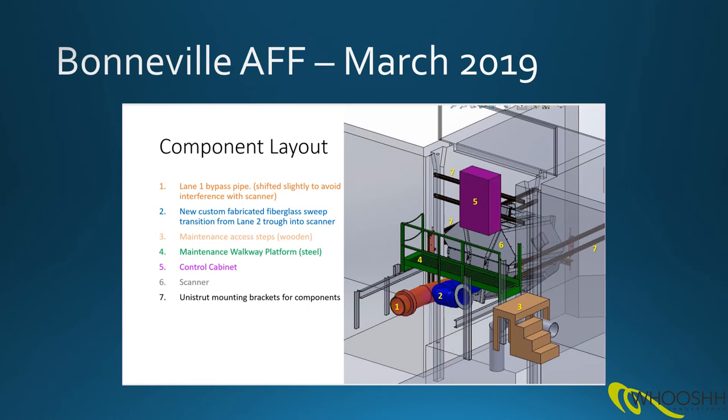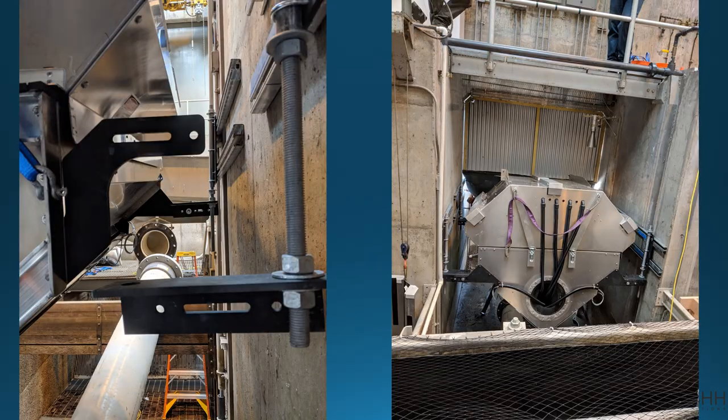A similar installation in 2019 was at the Bonneville Adult Fish Facility. The scanner was placed in the fish bypass. This means that all the fish not selected for manual workup went through the scanner at this particular facility. These two photographs show the scanner being installed last year. On the far side of the scanner on the right hand side is the return pool that connects back to the upper portion of the main ladder.